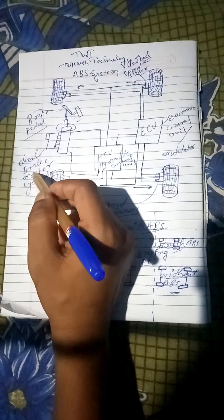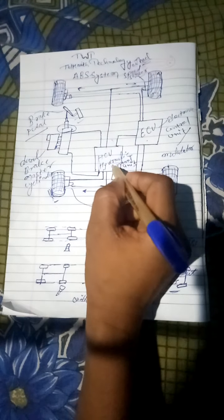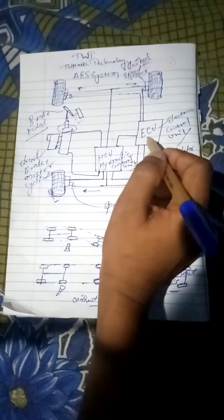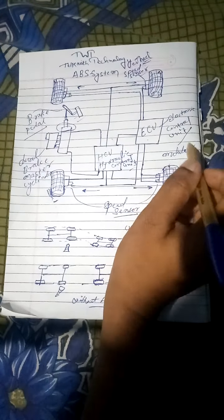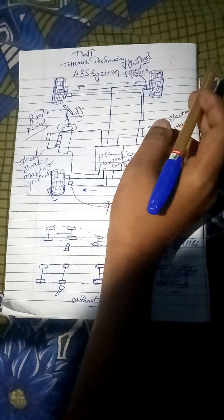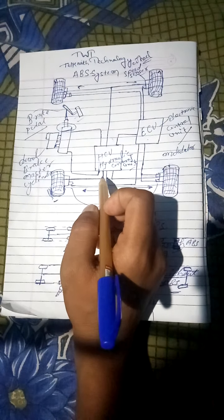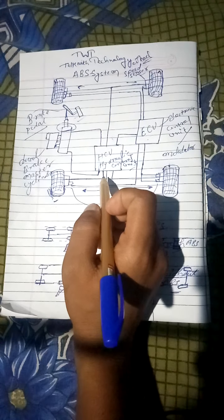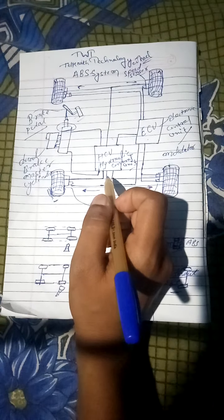Brake master cylinder, HCU hydraulic control unit or modulator, ECU means electronic control unit or modulator, next one is wheel speed sensor. Overall components are discussed. Now we have discussed about the ABS working principle and working system.